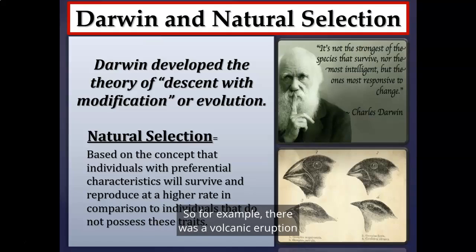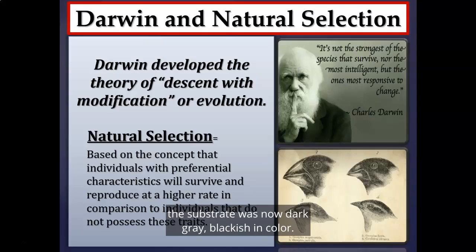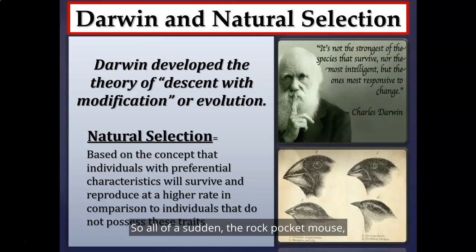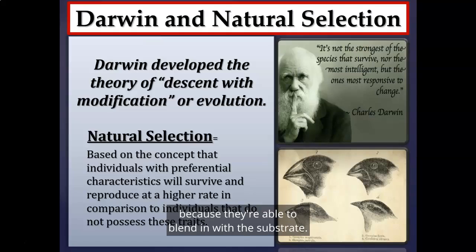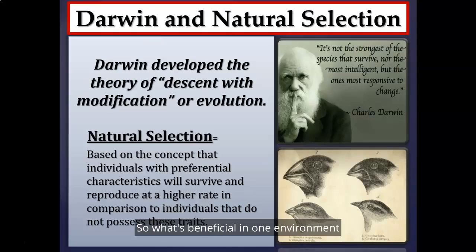For example, after a volcanic eruption, once the lava flow dried, the substrate became dark gray and blackish. So all of a sudden, the advantageous coloration for the rock pocket mouse became the dark gray color, because they could blend in with the substrate. What's beneficial in one environment may not be beneficial in another — that's important to keep in mind.